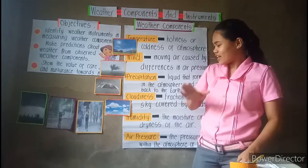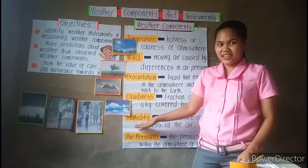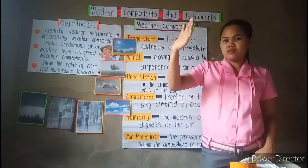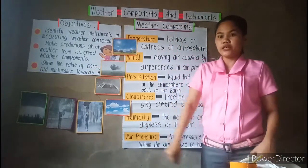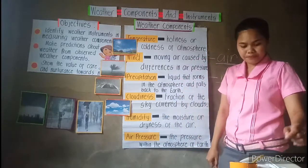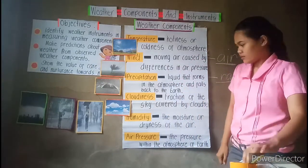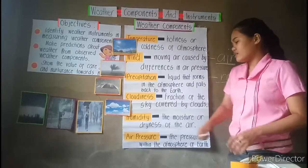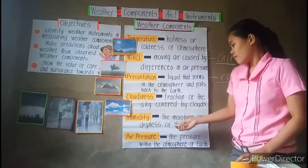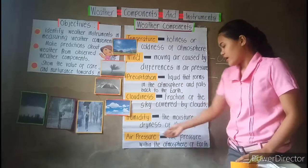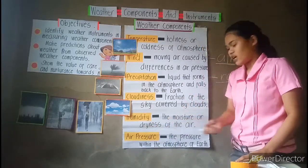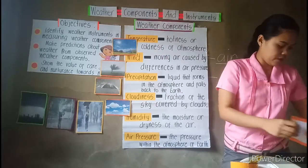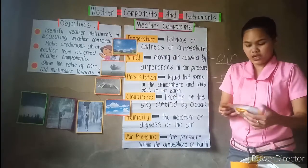Next class is humidity. Humidity is the moisture or dryness of the air. This is an example of humidity.